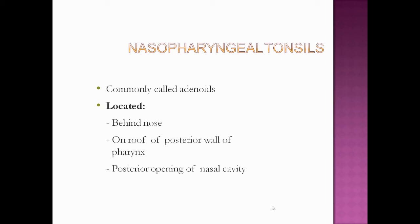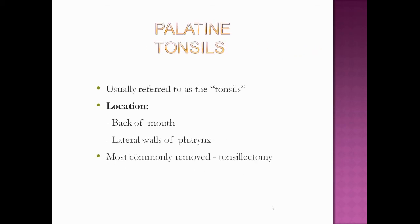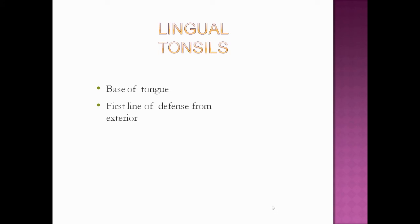Nasopharyngeal tonsils are commonly called adenoids, located behind the nose on the roof of the posterior wall of the pharynx and the posterior opening of the nasal cavity. Palatine tonsils — referred to simply as 'the tonsils' — are located at the back of the mouth on the lateral wall of the pharynx, and are most commonly removed through tonsillectomy. Lingual tonsils are situated on the base of the tongue and serve as the first line of defense from the exterior.